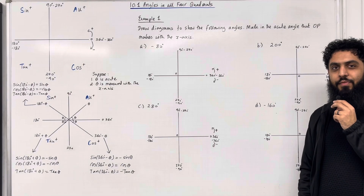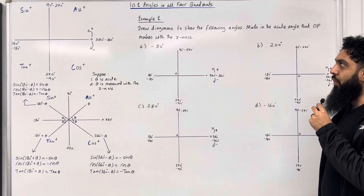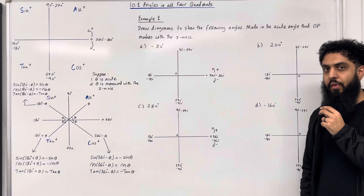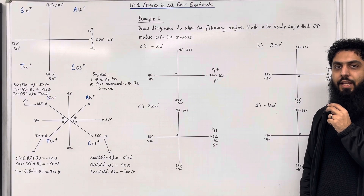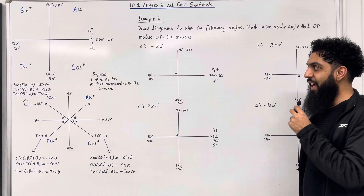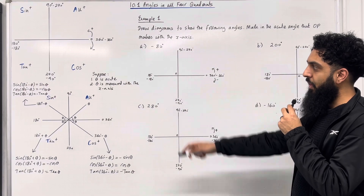Welcome back. In this teaching video, I'll be looking at 10.1 angles in all four quadrants. 10.1 represents chapter 10, section 1 of the Pearson A-level Maths Year 1 textbook. Let's have a look at the key facts of this section.